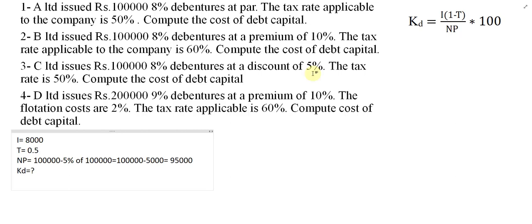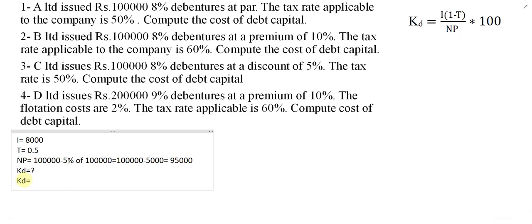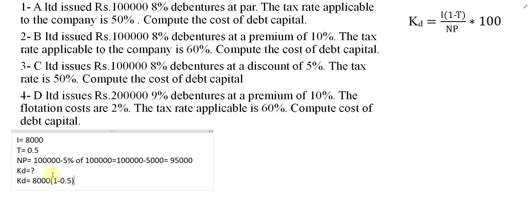So in this example NP becomes 95,000. Now we apply the formula. KD is equal to I multiplied by (1 minus tax rate), divided by NP, multiplied by 100. So: 8,000 multiplied by (1 minus 0.5), bracket close, divided by 95,000, multiplied by 100.